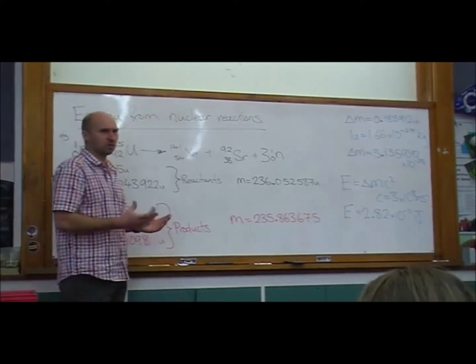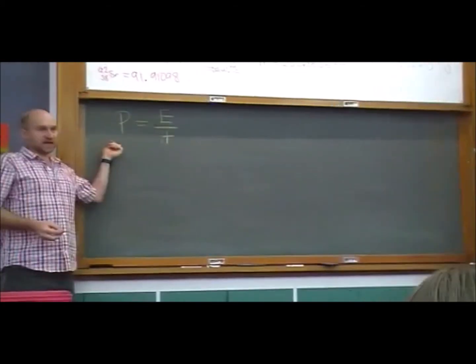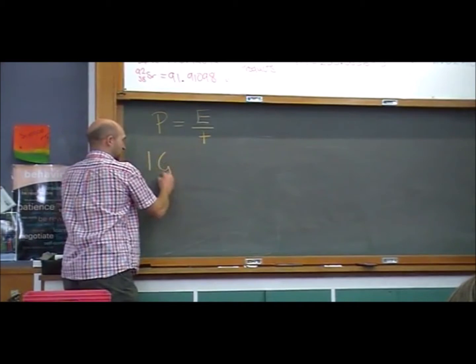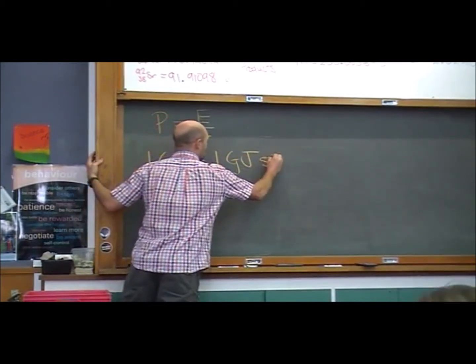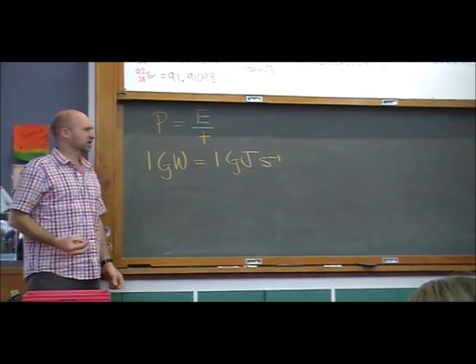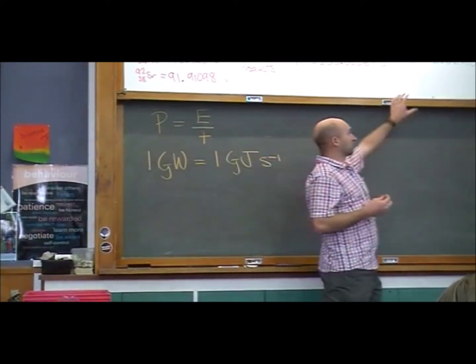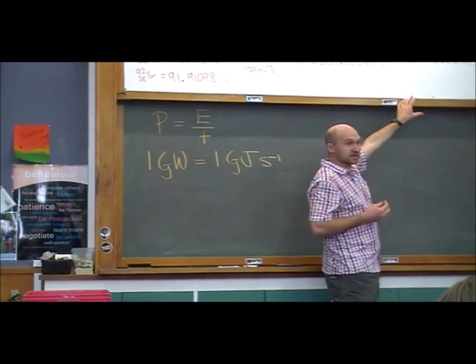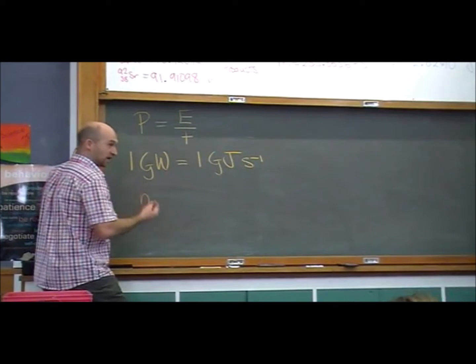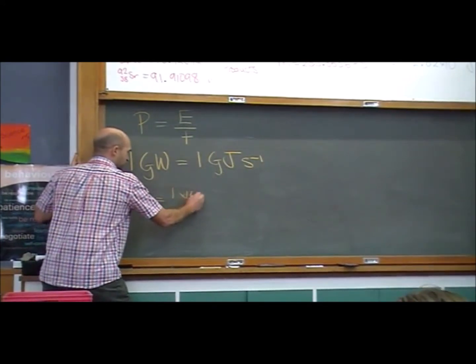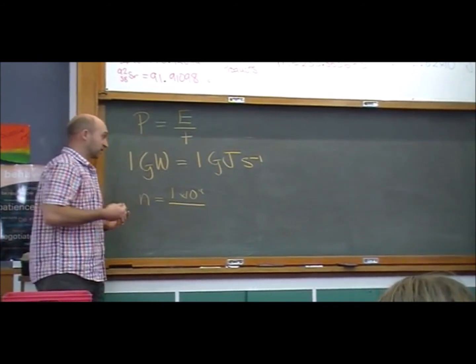One gigawatt, like one billion watts of energy. And so what we know is that power is energy per time. And so one gigawatt is the same as one gigajoule per second. One billion joules per second. And so if we're interested to know how many lots of that 2.8 times 10 to the negative 11 we need to make up one billion, we're going to go the number of uraniums that we need is going to be our 1 times 10 to the 9, that's our 1 gigawatt of energy, over the amount of energy that's released by each uranium.